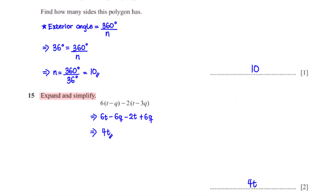Expand and simplify 6(t − q) − 2(t − 3q). Expanding: 6t − 6q − 2t + 6q. Collecting like terms: −6q + 6q = 0, and 6t − 2t = 4t. So the answer is 4t.